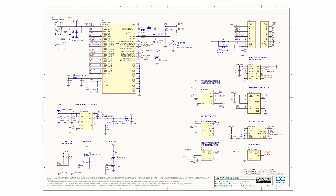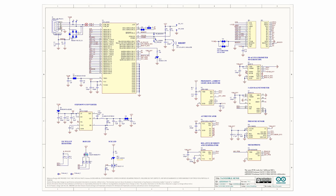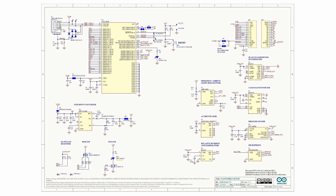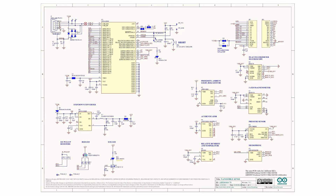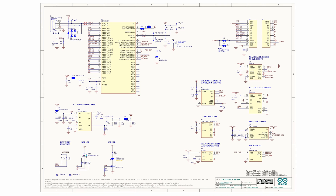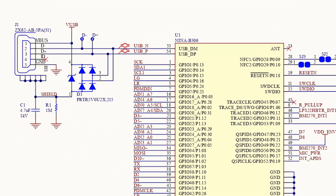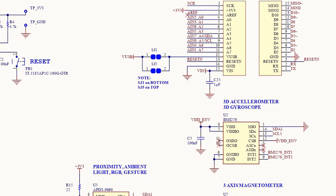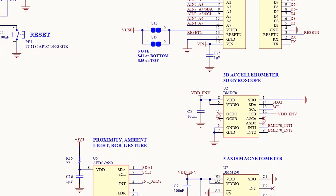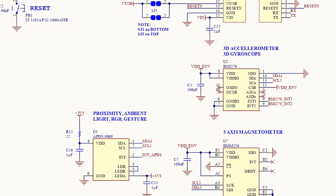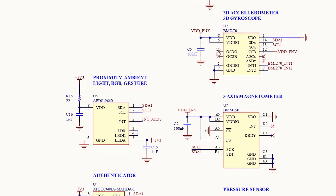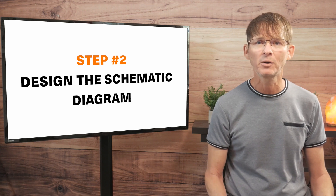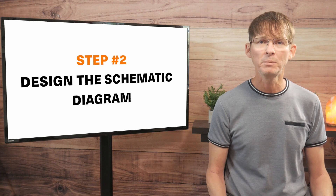The schematic diagram shows how every component, from microchips to resistors, all connect together. Whereas a system block diagram is mostly focused on higher-level product functionality, a schematic diagram is all about the little details. Something as simple as a misnumbered pin on a component in a schematic can cause a complete lack of functionality. In most cases, you'll need a separate sub-circuit for each block of your system block diagram, and these sub-circuits will then be connected together to form the full schematic circuit diagram.